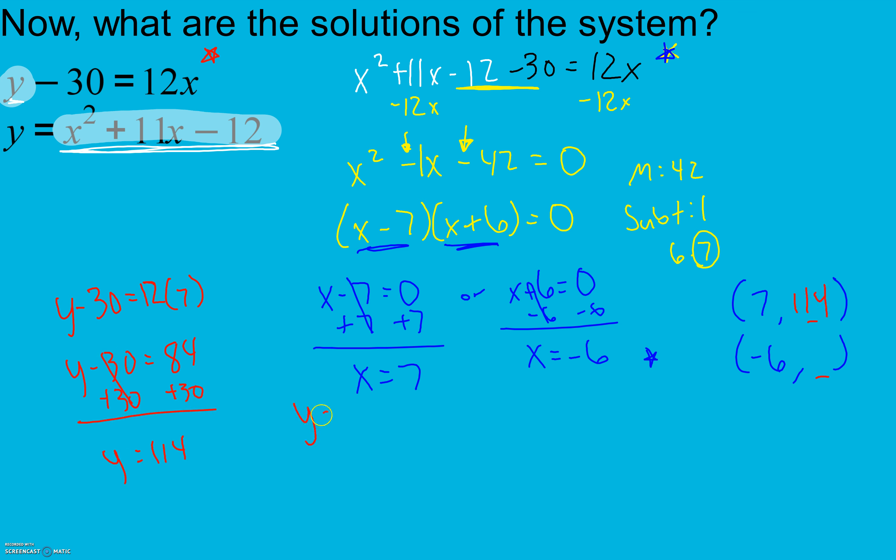I'm going to do the same thing for my second x value. Y minus 30 equals 12 times x. Again, I put my x value, negative 6, into x. Simplify both sides first and then add or subtract to get our y by itself. And again, if we plug those back into our equations, they will both work.